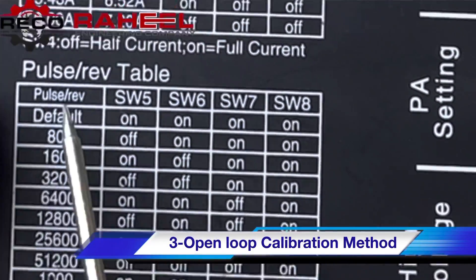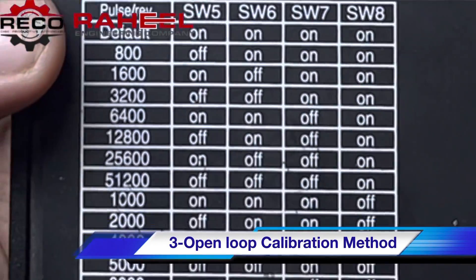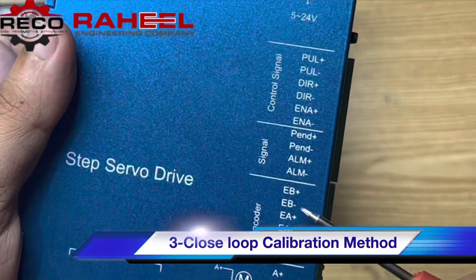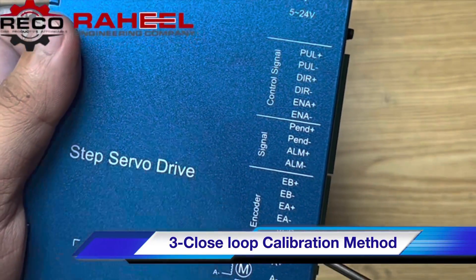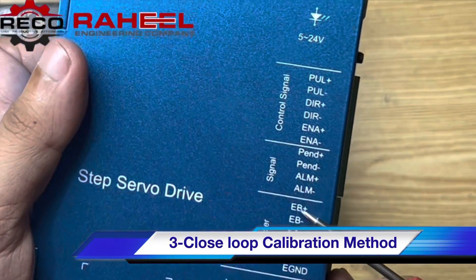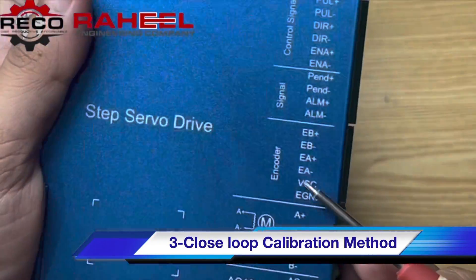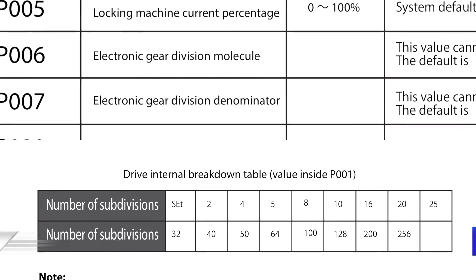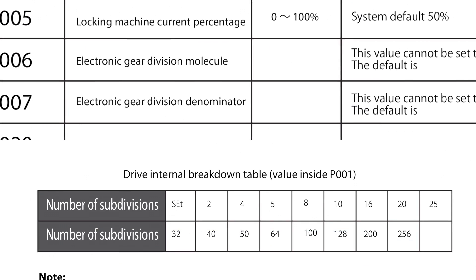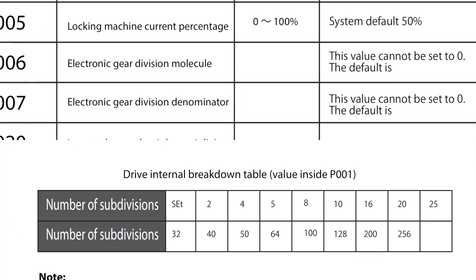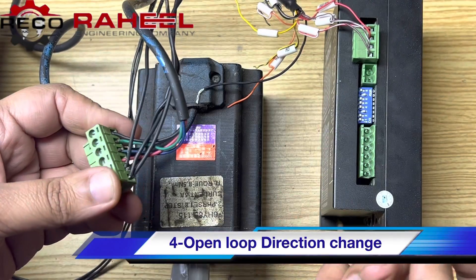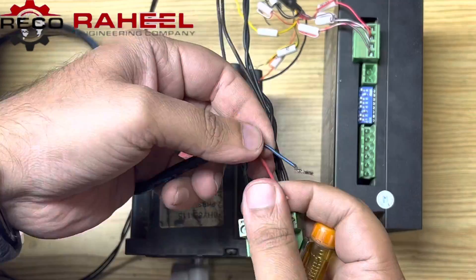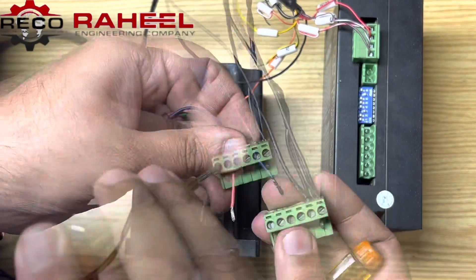Open loop calibration setting is done by DIP switch according to the pulse-per-revolution table. Closed loop calibration setting is done by two methods: the first method is step setting, and the second method is electronic gear ratio setting through parameters. Both types of parameters can be seen on the screen.